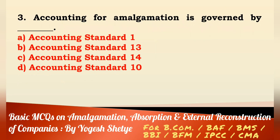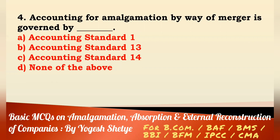Question 3: Accounting for amalgamation is governed by — Accounting Standard 1, AS 13, AS 14, or AS 10? Answer: Accounting for amalgamation is governed by Accounting Standard 14. Answer C. AS 14 applies to amalgamation, absorption, and external reconstruction.